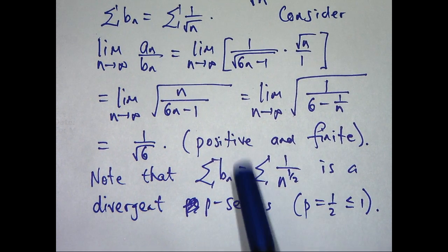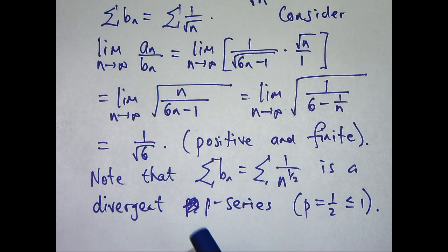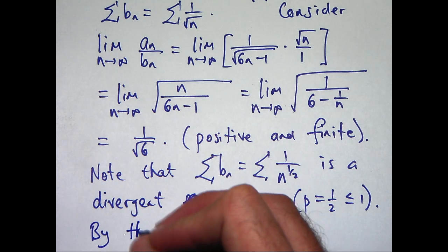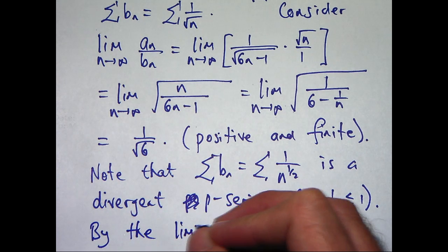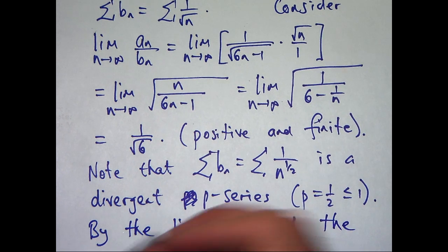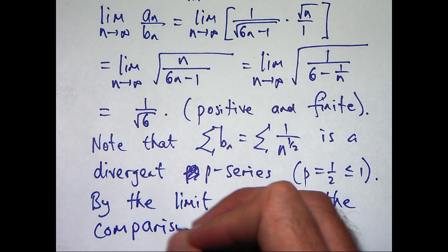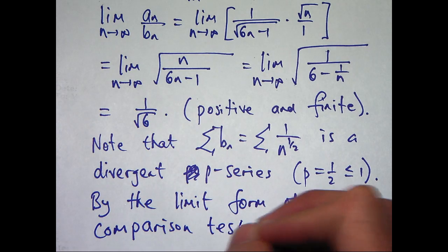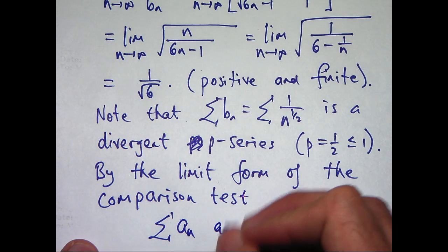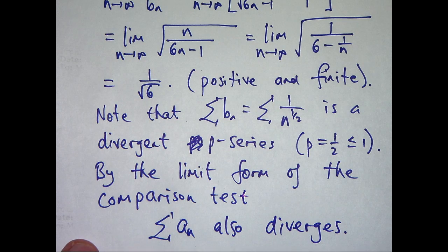So thus, our new constructed series is divergent. So by the limit form of the comparison test, our original series must also be divergent. Our original series must also diverge.